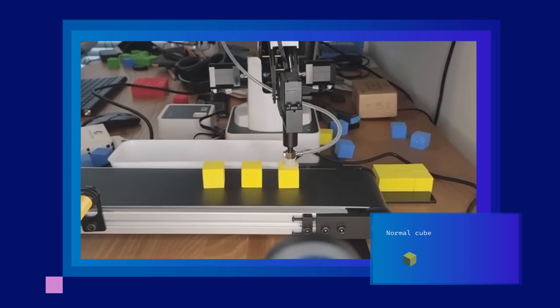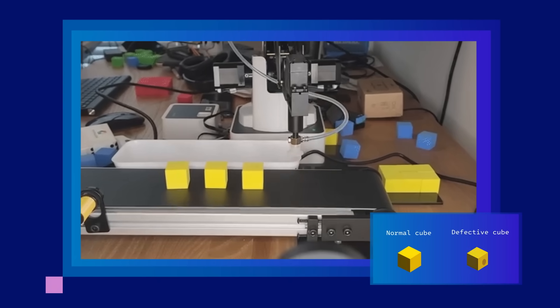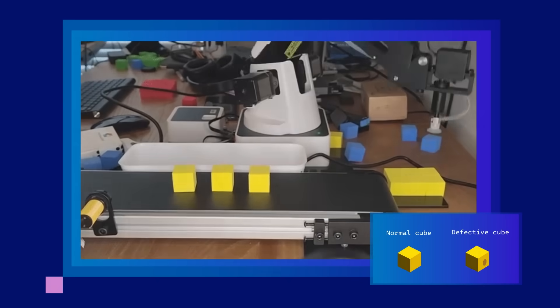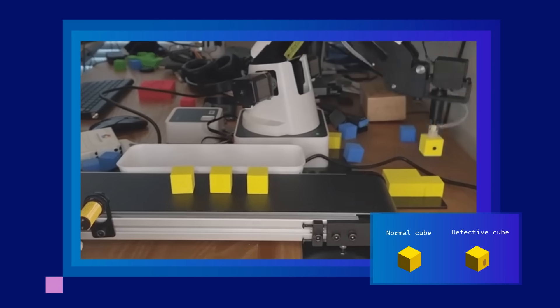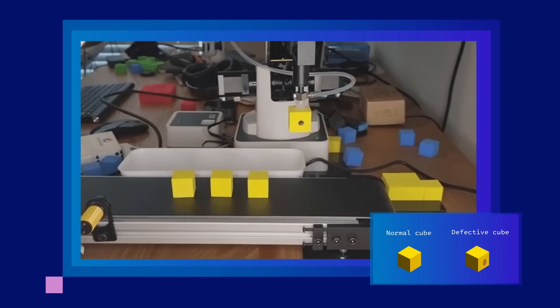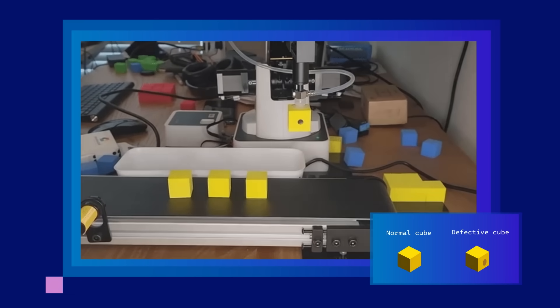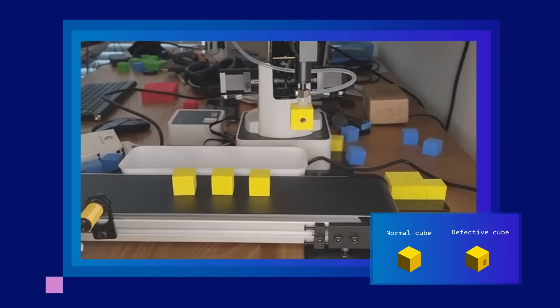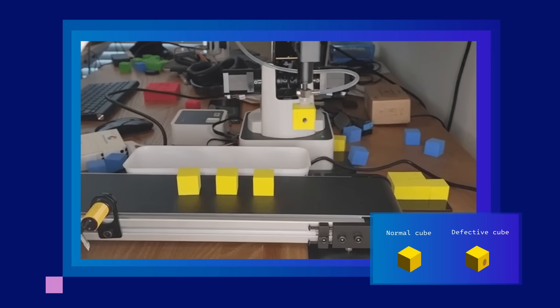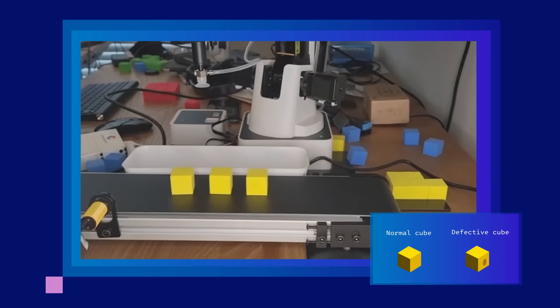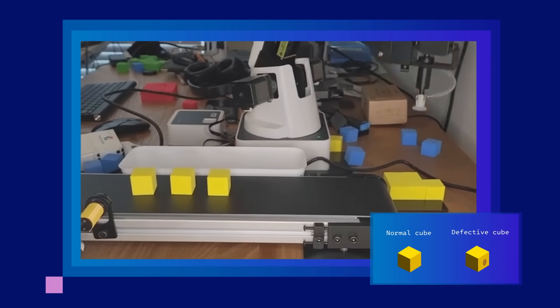To demonstrate, in this example we simulate a production line. Cubes with black dots are detected and removed as defects. This improves product quality while reducing waste.